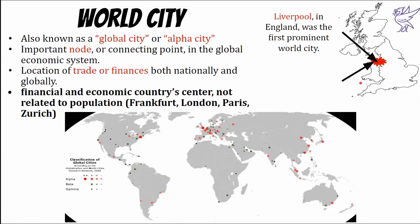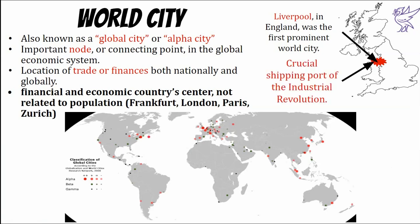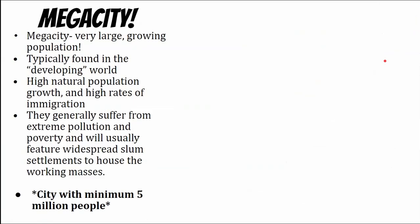Sometimes you'll hear about a world city, also called a global city or alpha city. It's important for financial connections and global trade. These alpha cities are always on the coast or on a big river. Our first world city was Liverpool — Liverpool had a relationship with Manchester, where Manchester made all the textiles and Liverpool shipped them everywhere. So Liverpool was the very first world city.